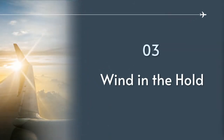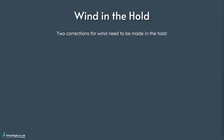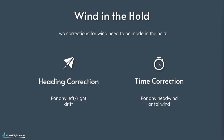Moving on to the wind in the hold. Everything we've talked about so far is flying the hold with no wind, but obviously that never happens. There are going to be days with crosswinds, headwinds, and tailwinds, so we need some method of correcting for the wind to keep ourselves in the right position. There are two corrections you need to make for wind in the hold. The first one is a heading correction - we're going to change our heading to compensate for any left or right drift resulting from crosswind.